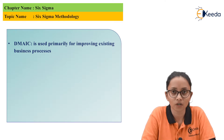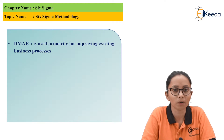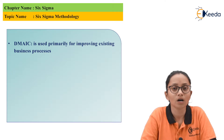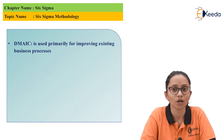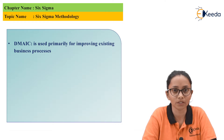Define is the first process in DMAIC methodology. In the define stage, we define the problem which we are facing in our business and also set goals where we see our business in the future. For example, suppose you are running a manufacturing plant and you want to increase the production rate. So this is your goal which you have to set in the first stage — that means you have defined your goals.